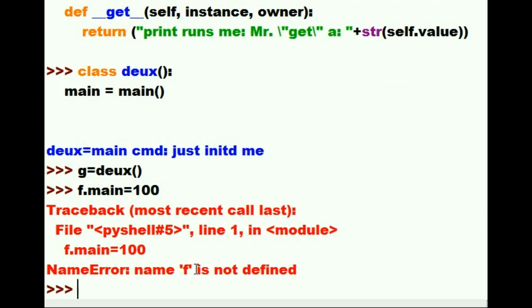Oh, and I get an error, because I just used the wrong variable, f. I was supposed to use the variable g. That was very smart of me. Let's change that back to g. g.main, equals 100. And I hit enter.